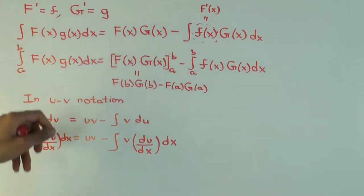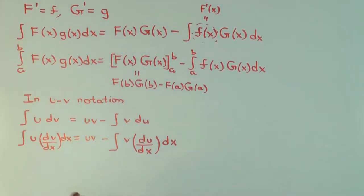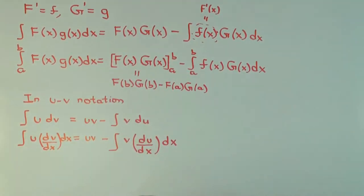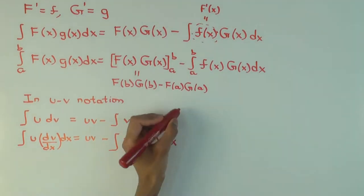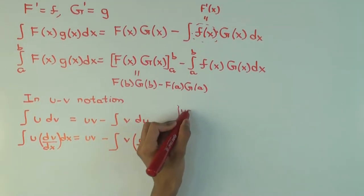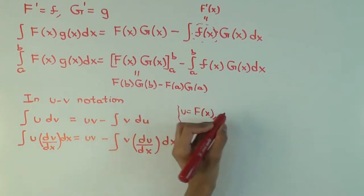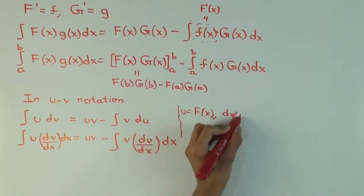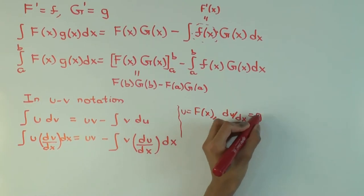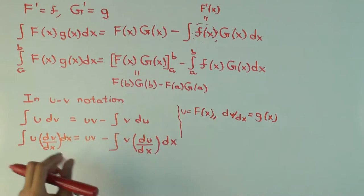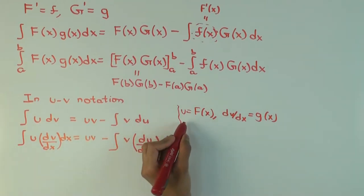What's the relation between the letters here and here? What's u in terms of this notation? Capital F(x). Okay. So here, the relation is u is capital F(x). What's dv/dx? g(x). Small g(x). Yeah. Okay. So that's the original product we're trying to find. What's v? Capital G(x).